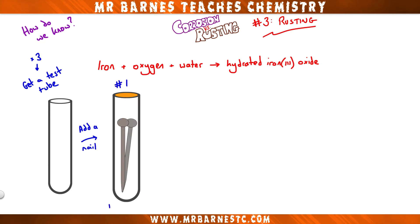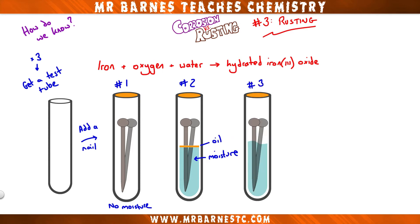In the first test tube, add no water so the nail only has oxygen from the air. In the second test tube, boil the water to remove the oxygen and then add a layer of oil to stop any oxygen from reaching the nail. And then in the third test tube, add both water and oxygen.